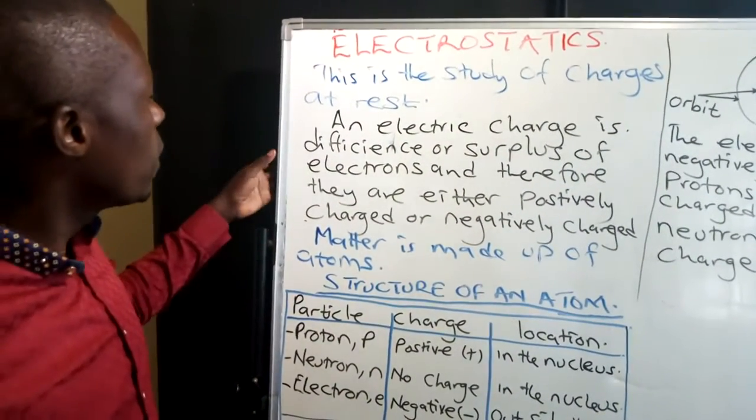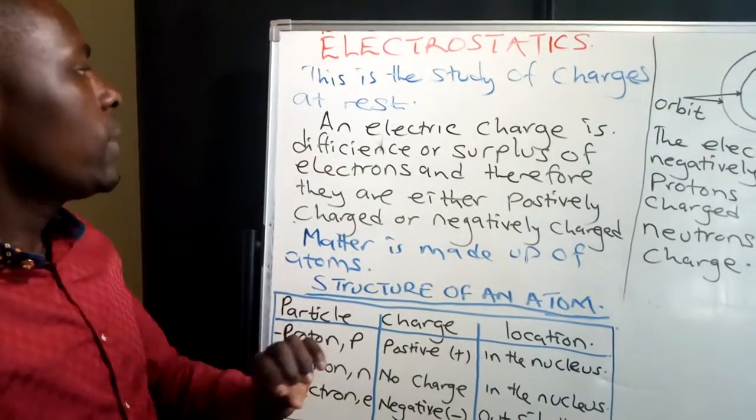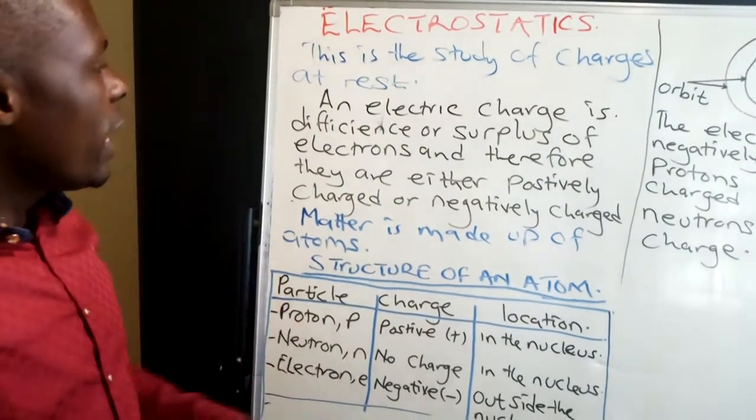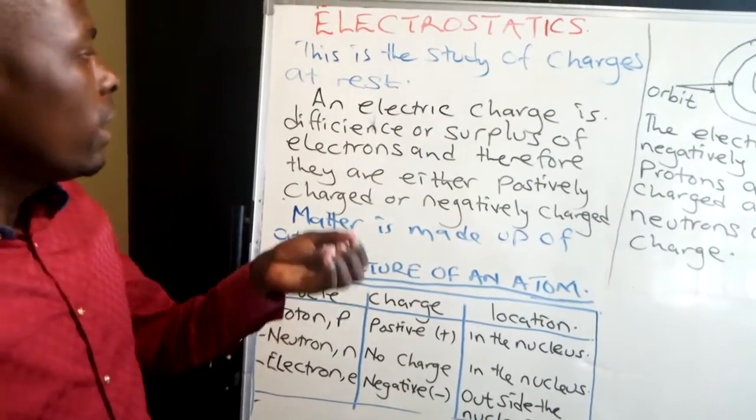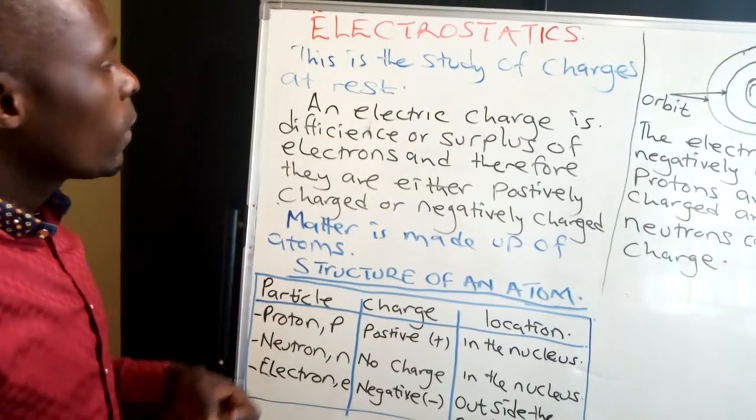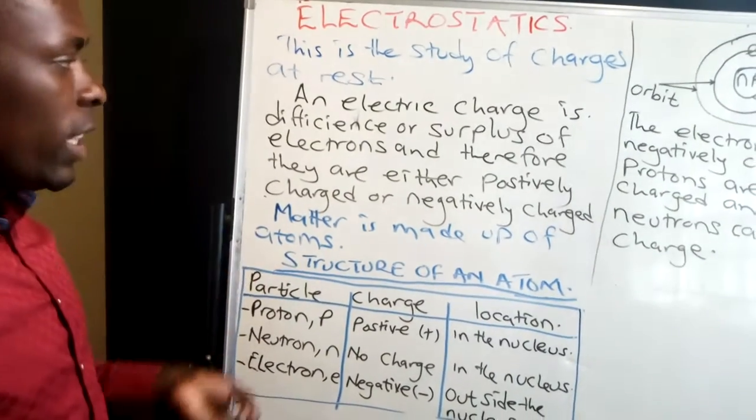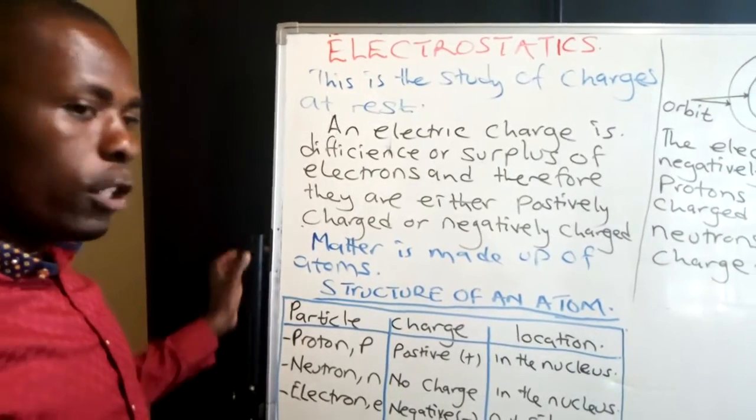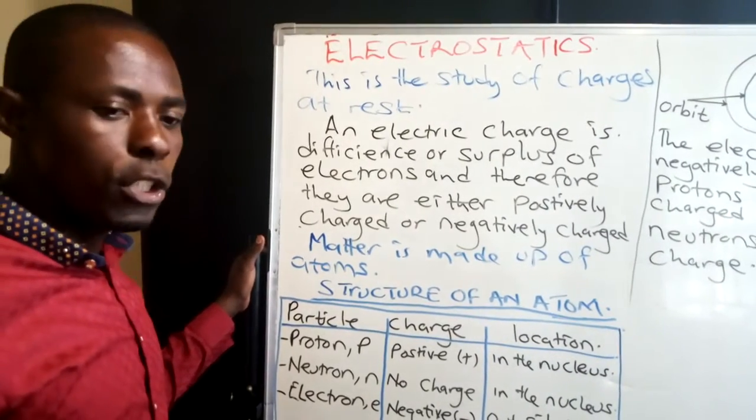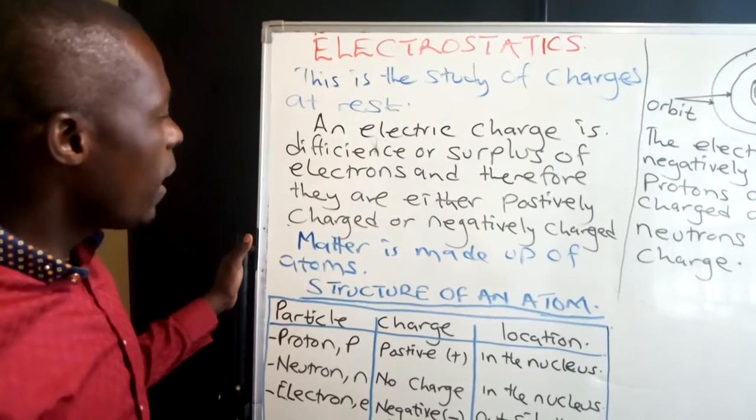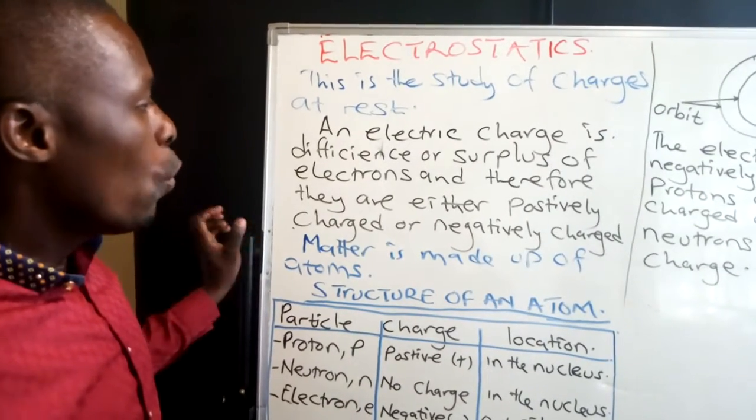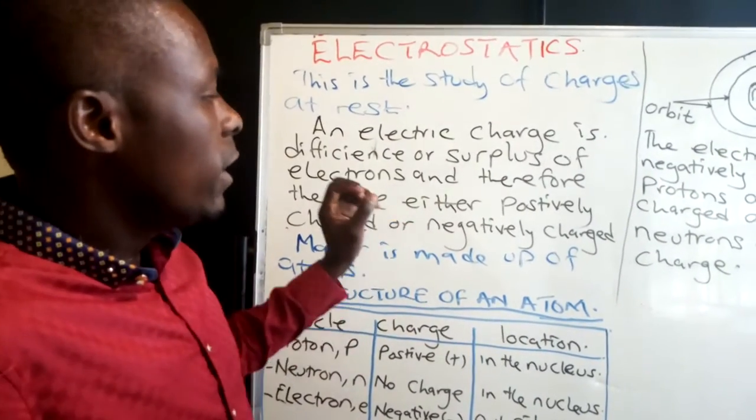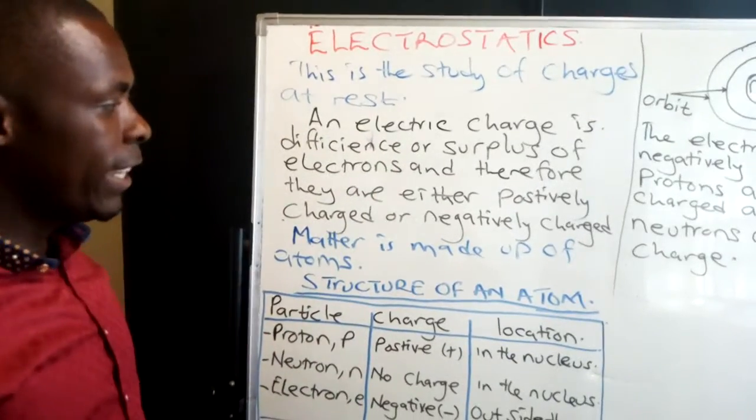When we look at electrostatics, we shall look at electric charge, which is either deficient or in surplus of electrons. Therefore they can either be positively charged or negatively charged. When it is positively charged, it gives out an electron.